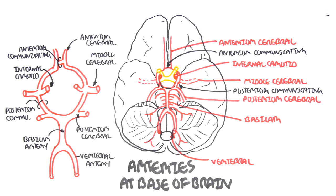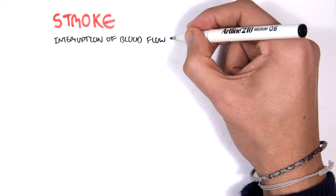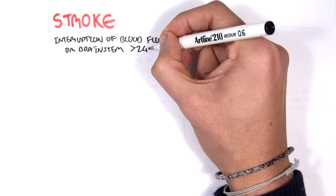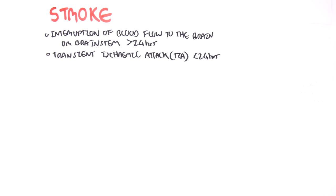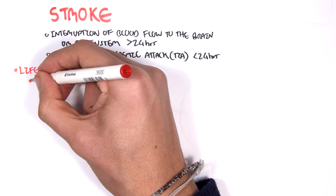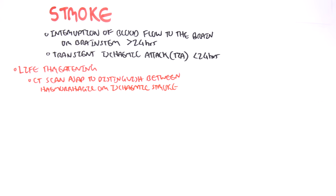Now let us use this information about the cerebral arteries to discuss some clinical applications. Stroke is a serious condition defined as the interruption of blood flow to the brain or brainstem for more than 24 hours. A transient ischemic attack, or TIA, is essentially when we have interruption of blood flow to the brain lasting less than 24 hours. Both stroke and TIA are life threatening. A CT scan must be conducted as soon as possible to distinguish between the two types of stroke — hemorrhagic and ischemic. If it is an ischemic stroke, thrombolytic therapy must be initiated as soon as possible.